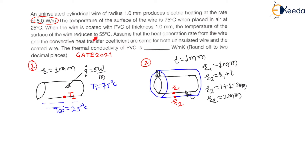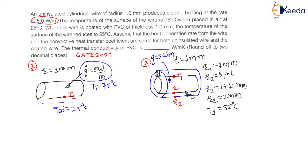Assume that the heat generation rate from the wire and convective heat transfer coefficient are the same for both the uninsulated wire and the coated wire. So Q is 5 Watt per meter and the convective heat transfer coefficient H is the same value in both cases.